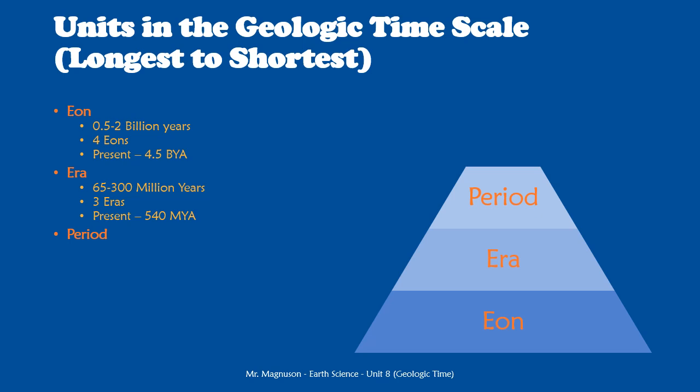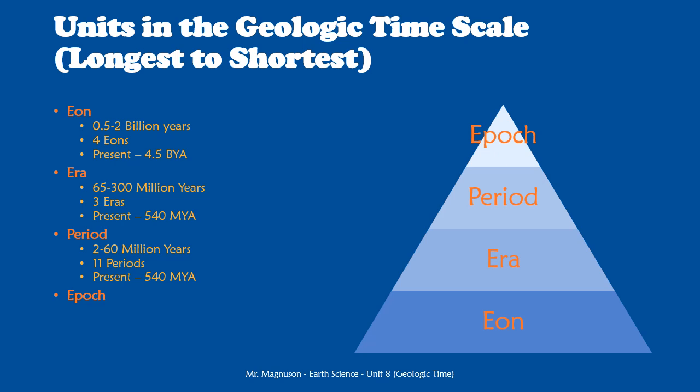Next are periods — a few million to tens of millions of years long, definitely not as long as eras or eons. There are 11 periods in the geologic timescale. They don't go back to 4.5 billion years ago; they start at the same time we started counting eras — 540 million years ago. This is when scientists had a lot more evidence to figure out more specifically what happened, so it made more sense to divide things into more periods of time.